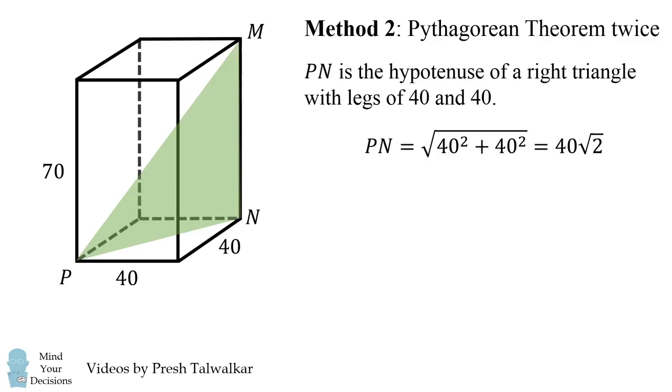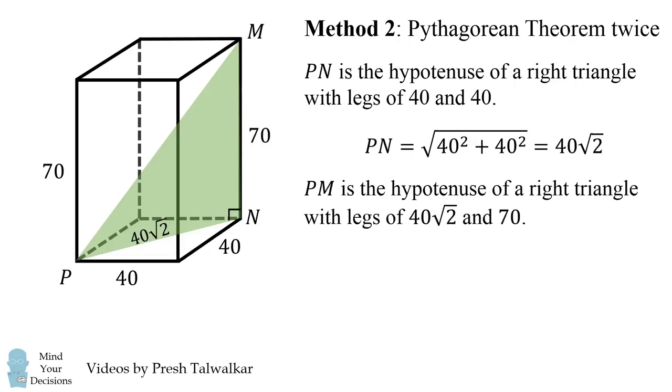We can then draw a triangle PNM and that's another right triangle. This has legs of 40√2 and 70. So PM is the hypotenuse of this right triangle, and we can calculate its distance by taking the square root of (40√2)² + 70². This again simplifies to the square root of 8100, which is 90.